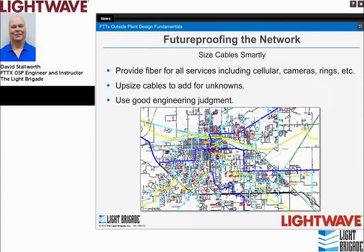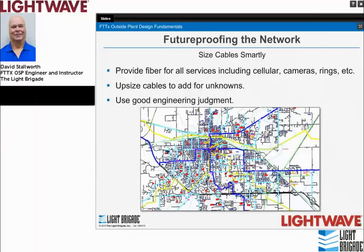There's also future proofing to consider. We need to get our hands around all the services we want to provide in the network, including cellular, cameras, rings, and various configurations. We want to size cables for any unknowns. There's a method to estimate the number of facilities needed even for vacant land. Understanding zoning — at least in the United States — and what the future plan for land is, is very important. Good engineering judgment is always essential.